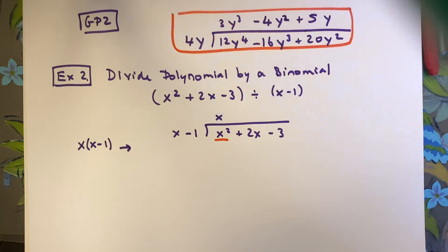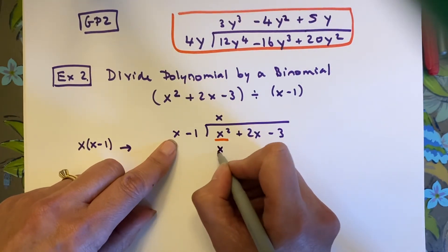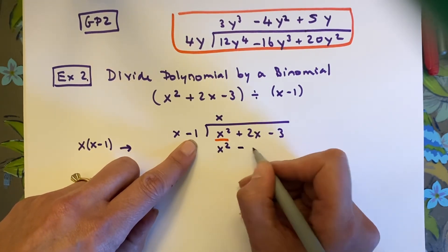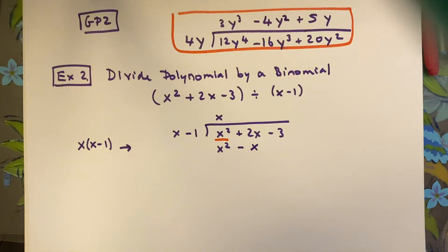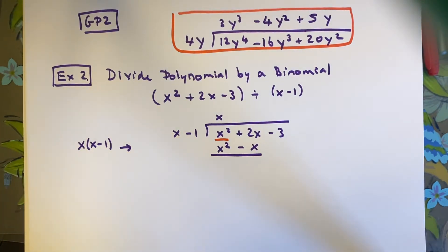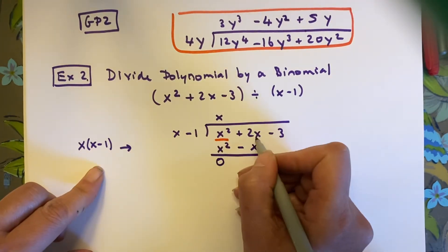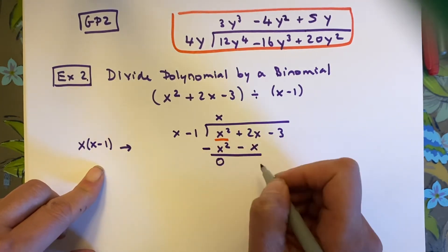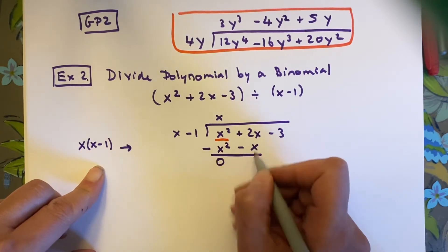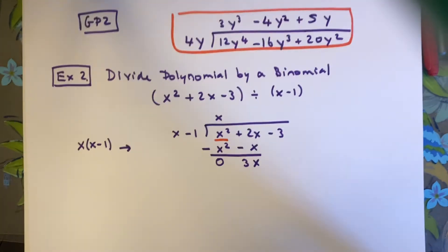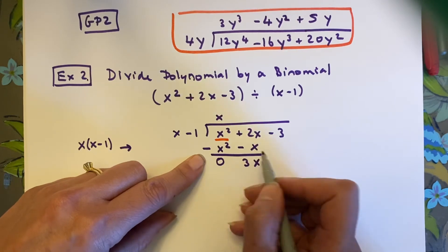So I multiply x times the entire binomial x minus 1: x times x is x squared, and x times negative 1 is negative x. When I subtract — changing the sign — x squared minus x squared is 0, and 2x minus negative x becomes 2x plus x, giving me 3x. Be very careful subtracting a negative: minus minus becomes a positive.